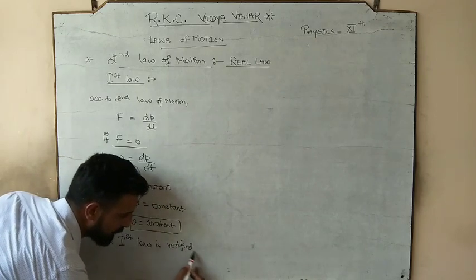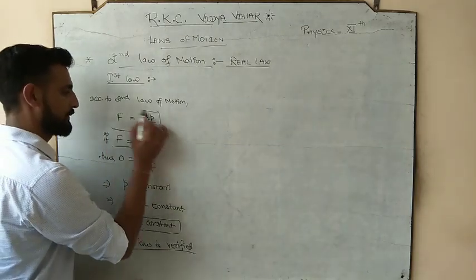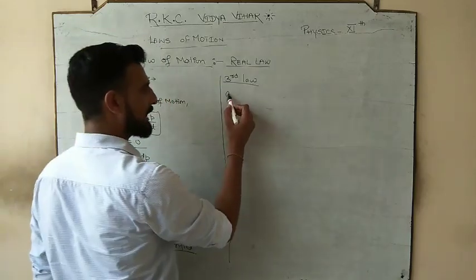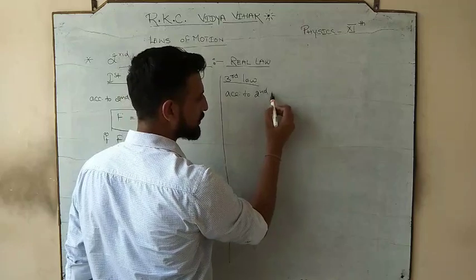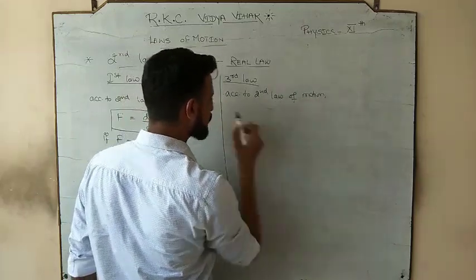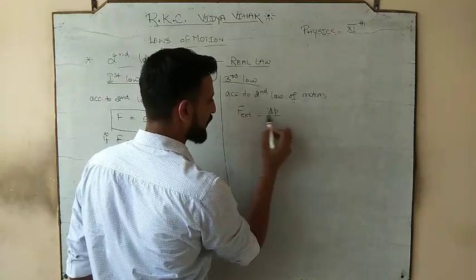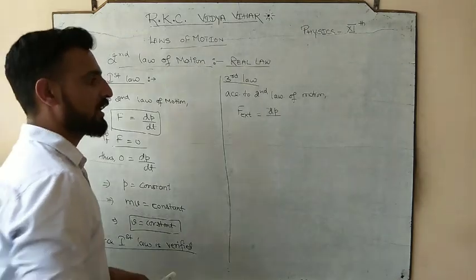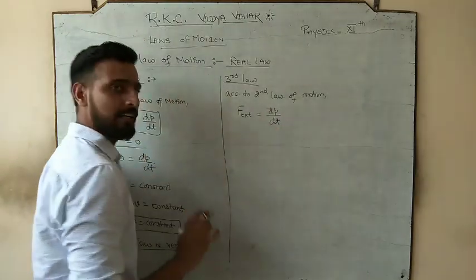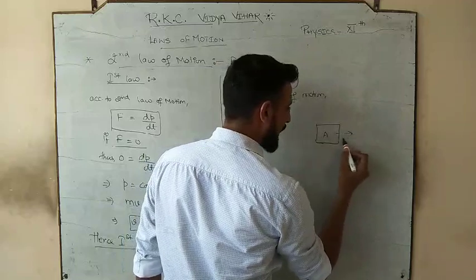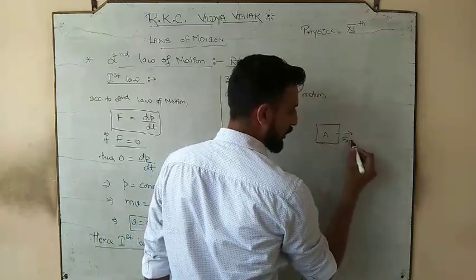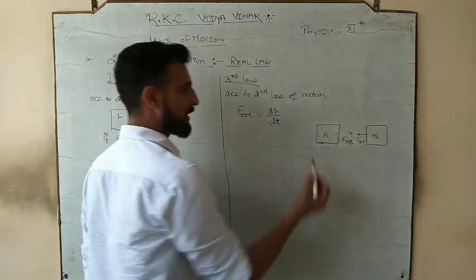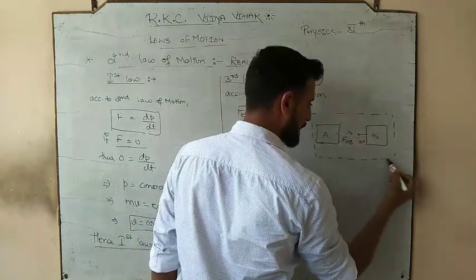This is the verification of the first law using the second law. Now we are going to prove the third law by using the second law again. According to the second law, external force is always responsible for the rate of change of momentum. We take the same example: body A has force FAB acting on it due to B, and body B has force FBA acting on it. This is our system, and the external force on the system is zero.